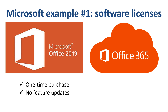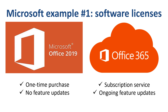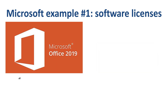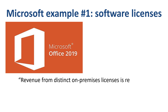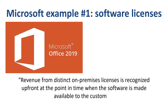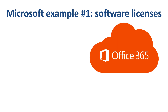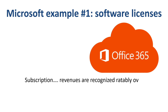Security updates are included, but you won't get any new features. Office 365 is a subscription service — your version of Office will always be improving. You'll get all the latest features and updates, as well as security updates and bug fixes. Obviously, the revenue recognition on Microsoft's side is very different between the two business models. License revenue is generally recognized upfront, at the point in time when the software is made available to the customer. Revenue related to services provided on a subscription basis is recognized ratably over the contract period — in other words, allocated to the various periods of the duration of the contract.